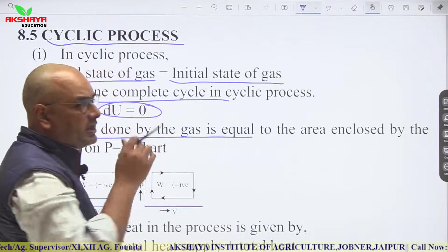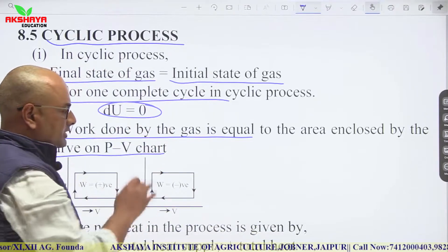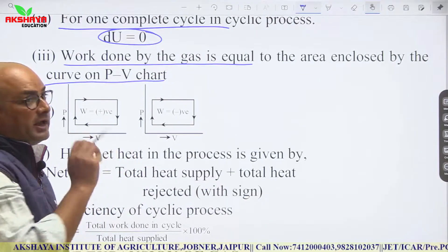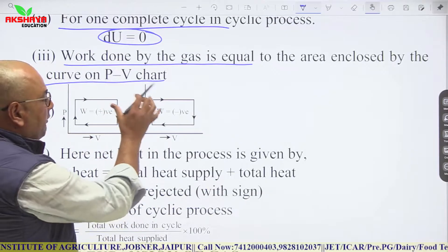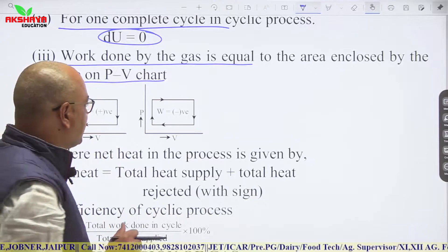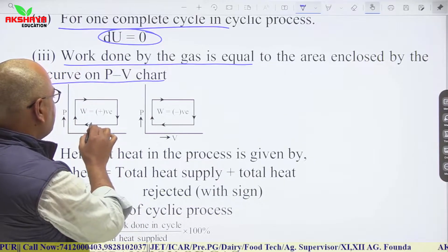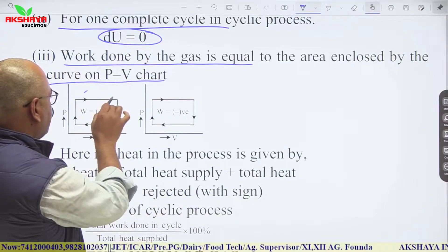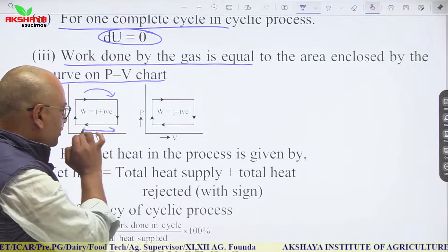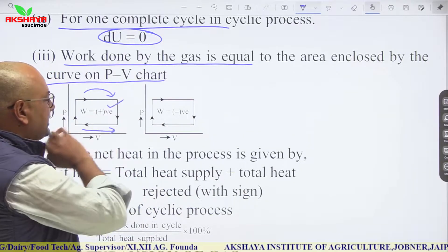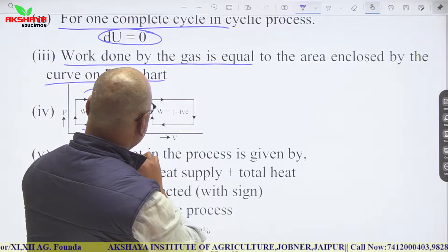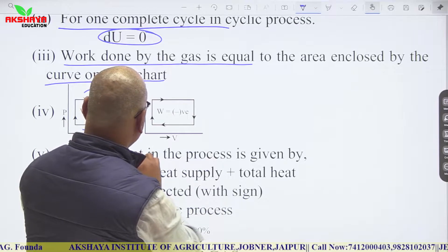For a complete cycle, the change in internal energy is zero, so ΔU = 0. Work done by the gas equals the area enclosed by the PV curve. If the cycle is clockwise, volume is increasing and work done is positive. If the cycle is anticlockwise, work done is negative.